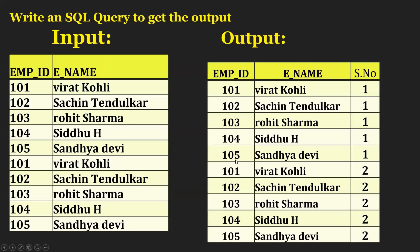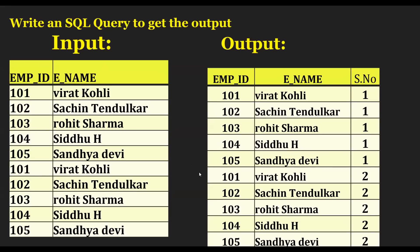The ROW_NUMBER windowing function assigns a unique number to each row within a partition of a result set. The numbering starts with one and increases by one for each row, based on the order specified by the ORDER BY clause within the OVER clause.